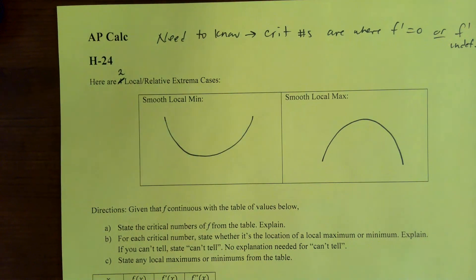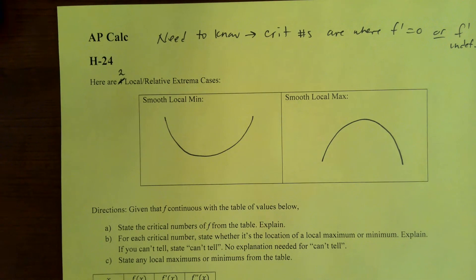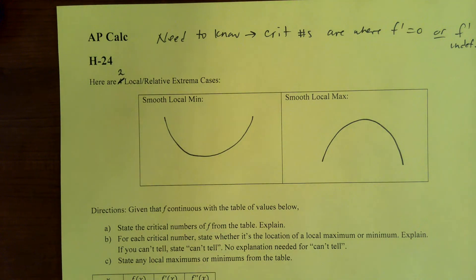Here are two local or relative extrema cases. Local extrema and relative extrema are the same thing. They just mean the highest or lowest Y value within a certain neighborhood — that neighborhood could be small or big. So they're the highest or lowest Y value among the Y values next to it, like really close to it. We have two cases where we could have a smooth local min or a smooth local max.